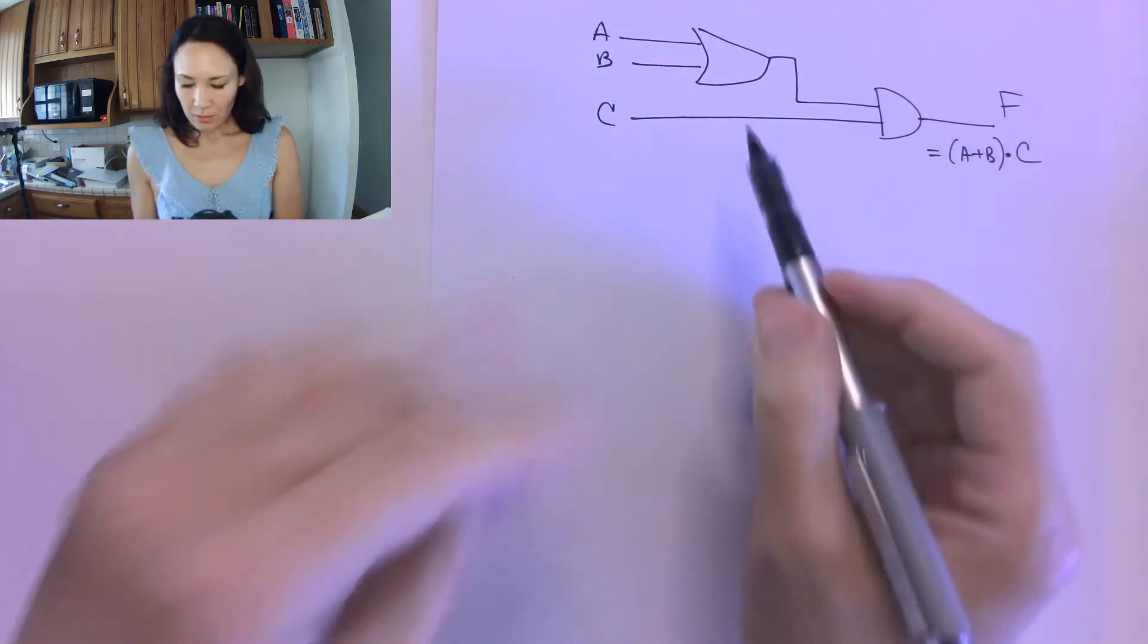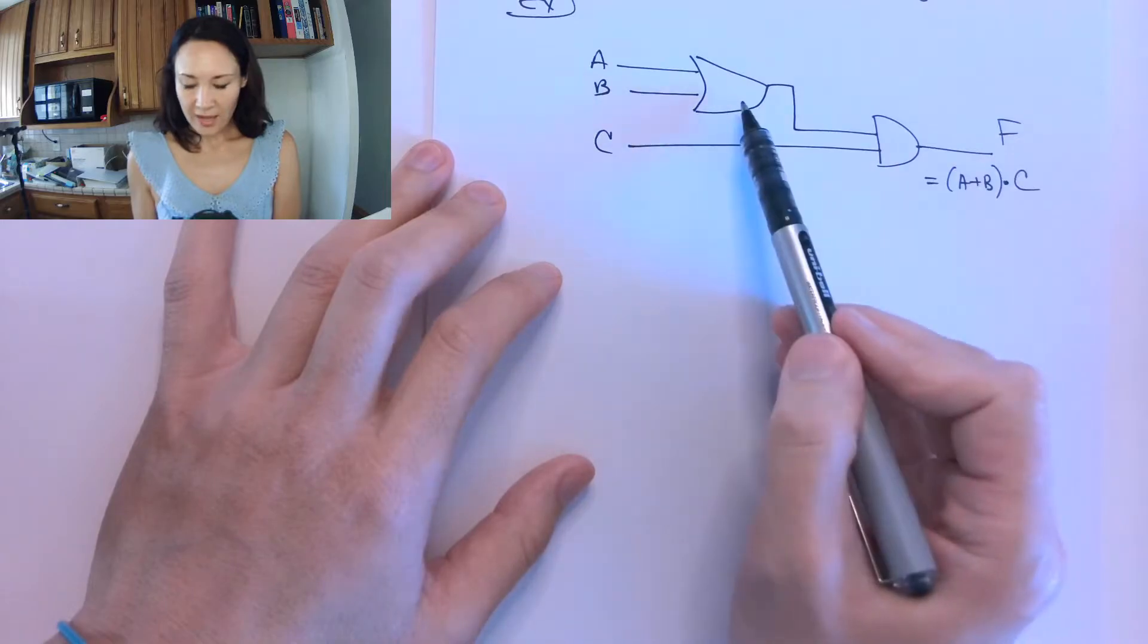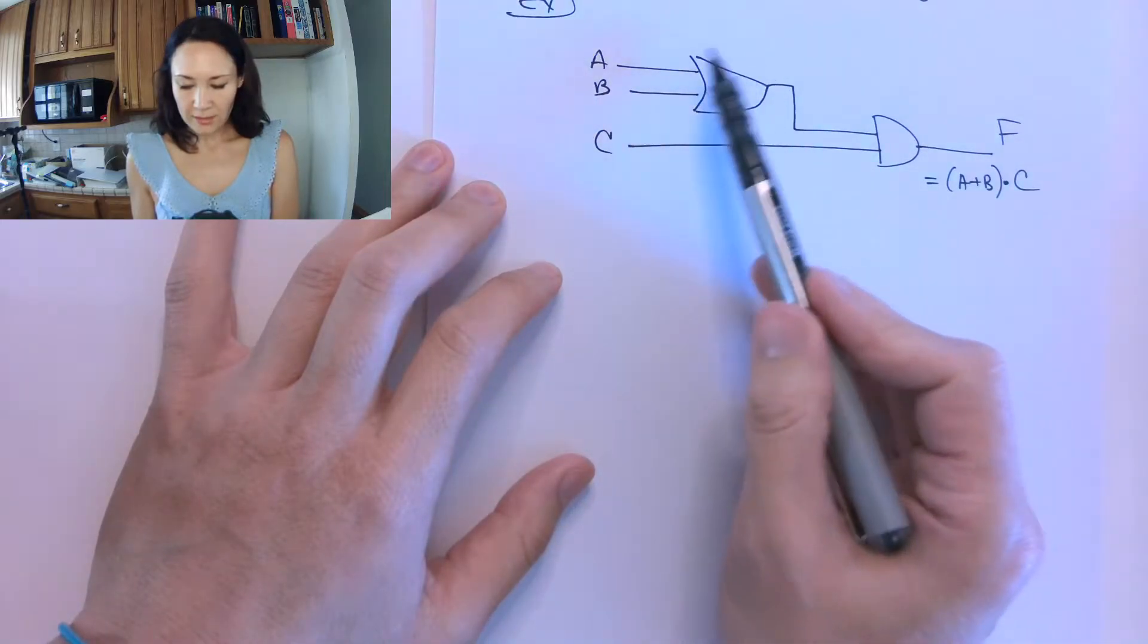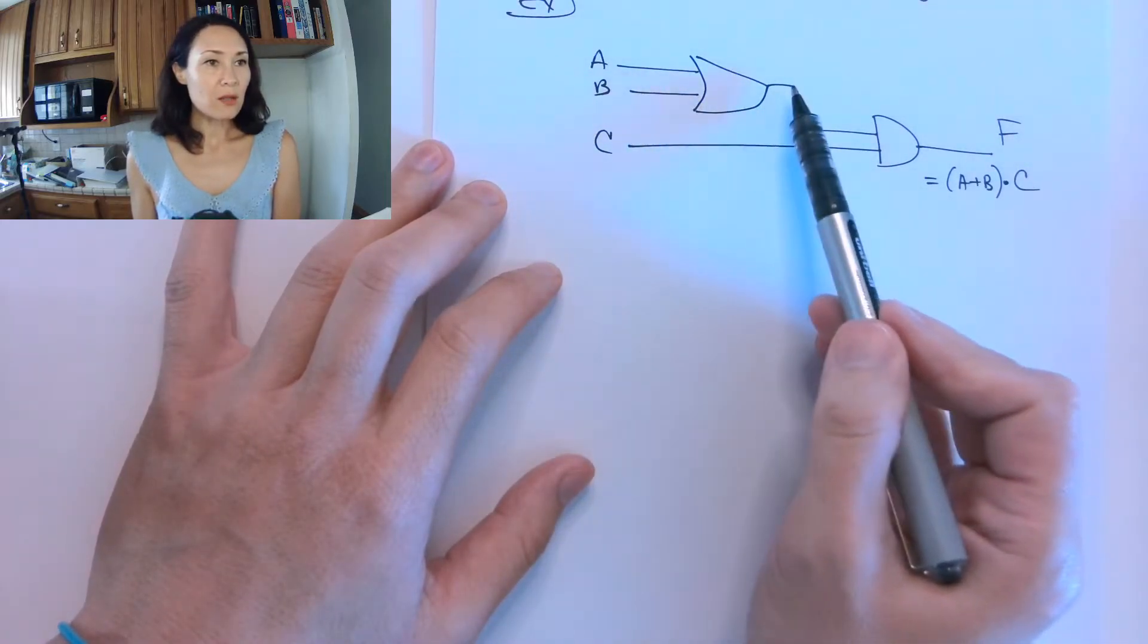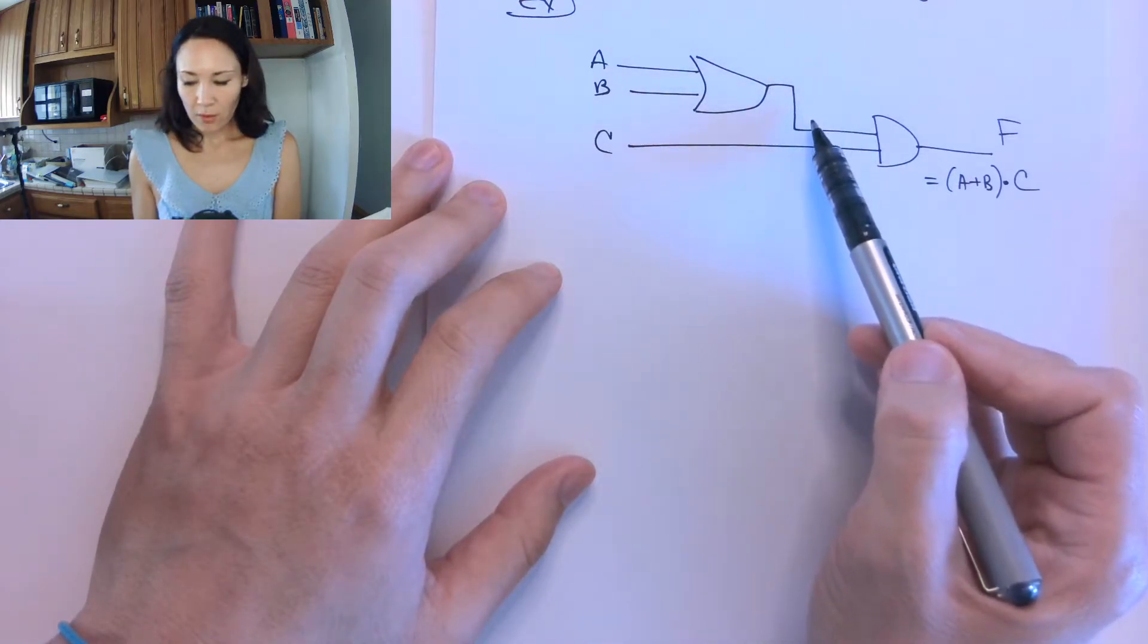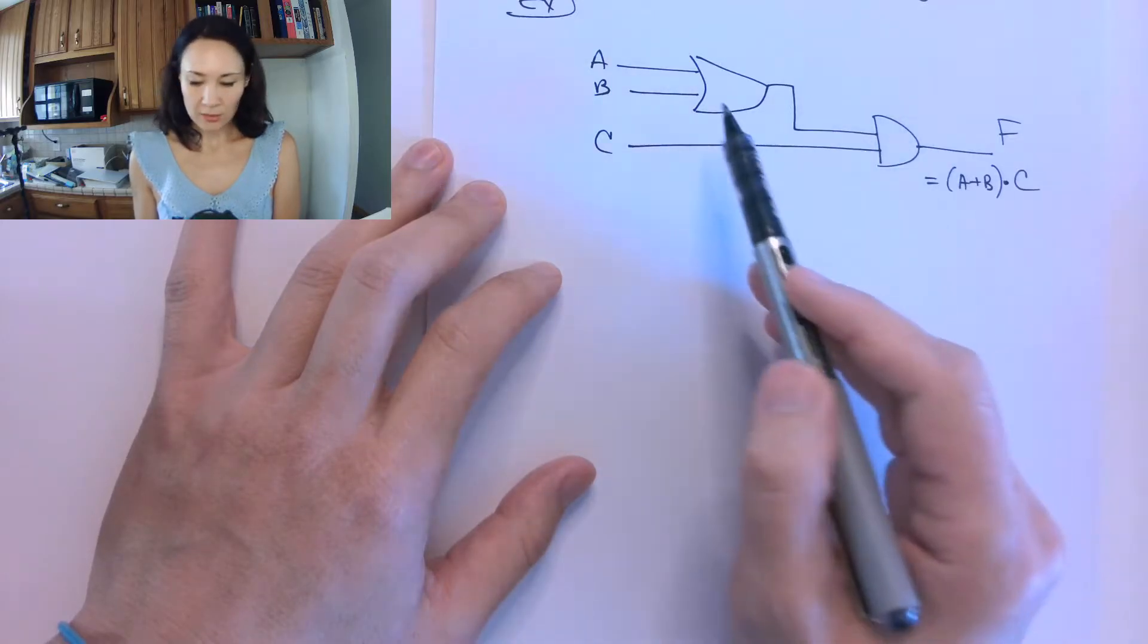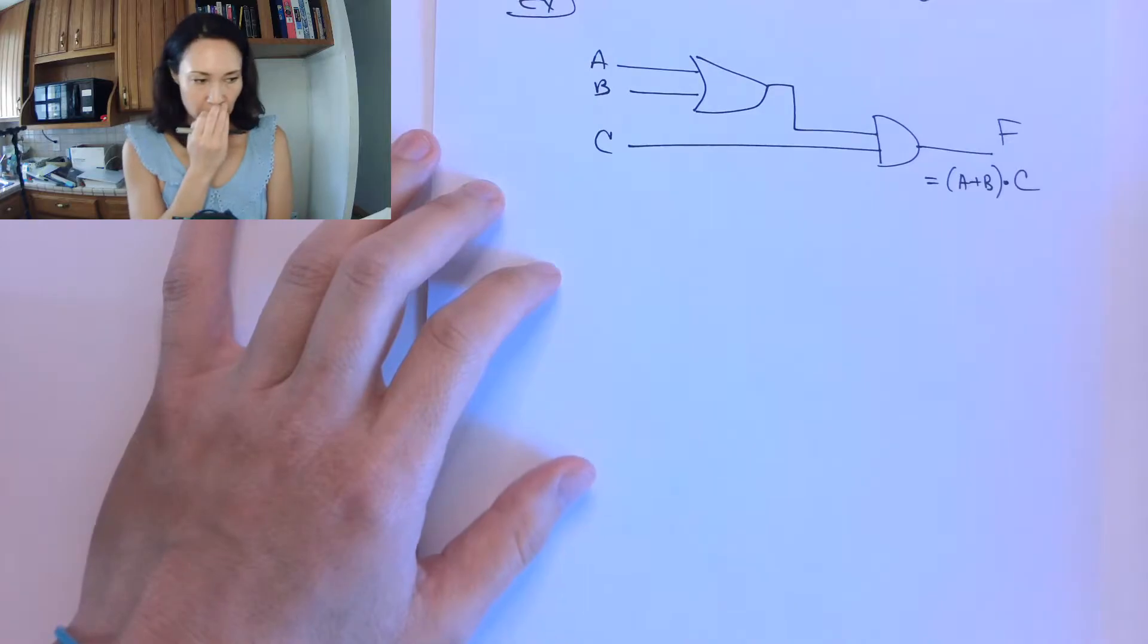This is called a two-level circuit because we have the first level as this OR gate. We need this to evaluate and produce an answer before we can evaluate the second stage, which is the AND gate. So we have two levels in this particular circuit.